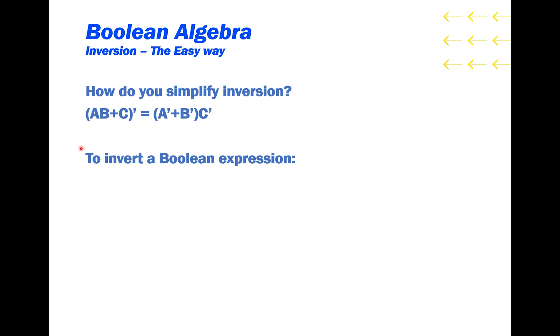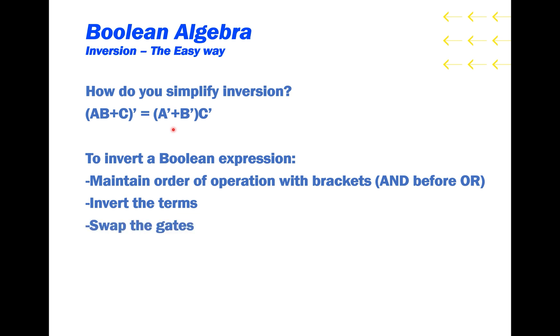So, to invert a Boolean expression, maintain the order of operations with brackets. The AND operation is performed before the OR, so in the inverted function we put brackets around the A and B to perform the OR first. Invert the terms, and swap the gates, and then you can expand at the end using distributive property.